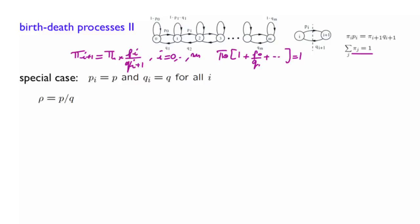Now let us write down these equations for that special case. We end up with pi i plus 1 equals pi i times rho, by definition of rho. Once you look at this equation, you realize that pi of 1 is pi of 0 times rho, and pi of 2 is pi of 1 times rho equals pi of 0 times rho squared, and so on. You can express pi of i as pi of 0 times rho to the power i for any possible i between 0 and m.